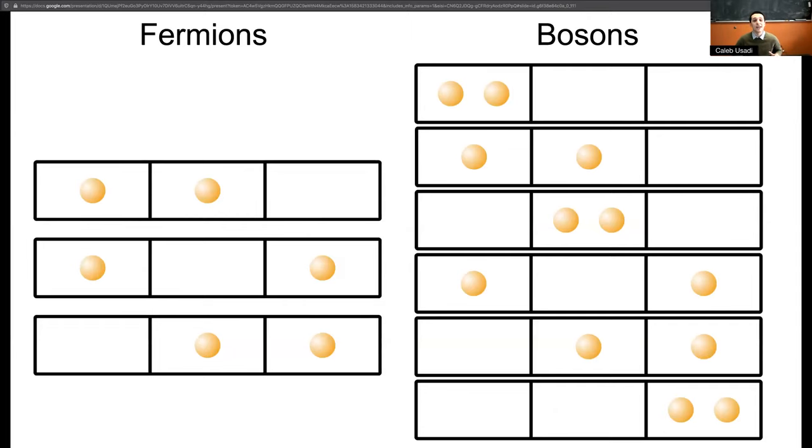Because you can only have one fermion per site there are far fewer configurations than for bosons. In the case of two particles on three sites as shown here you can have three configurations if the particles are fermions and six if the particles are bosons. A more dramatic example would be ten particles on ten sites. If the particles are fermions there's only one configuration of one particle on each site, but if the particles are bosons there are over 90,000 configurations of particles on these sites.